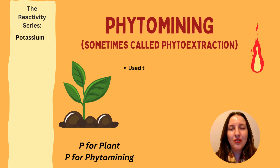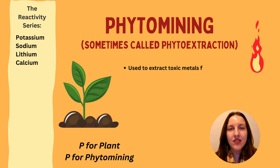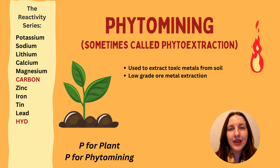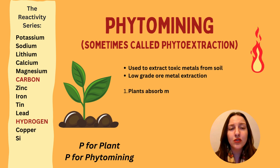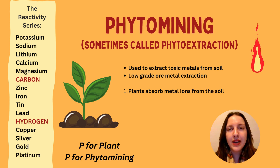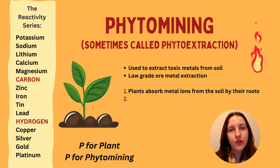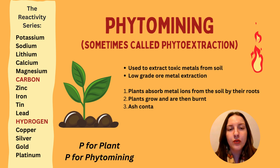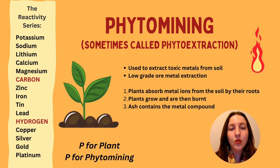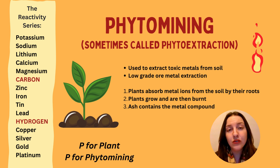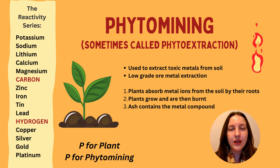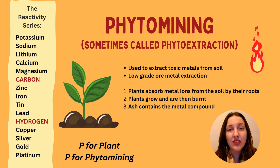For those studying the higher tier exam content, here are two biological processes that can be used to extract metals. The first one is phytomining — sometimes called phyto extraction. Essentially, it uses plants to extract metals from the soil. It's used to extract toxic metals from the soil, or to extract metals from low grade ores. The plants are planted in soil that contains either the low grade ores or toxic metals, which could have come from somewhere like a nearby mine.